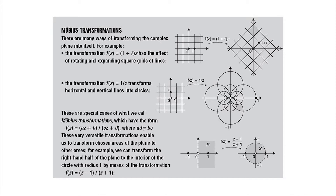Here are three examples. The first maps the complex plane to itself by multiplying by a particular complex number 1+i, which has the effect of rotating and stretching a rectangular network of lines. The second transformation, 1/z — inversion — has the lovely property of taking a family of horizontal and vertical straight lines and converting them into a family of circles, with a shaded region on the left mapped to a new region on the right.